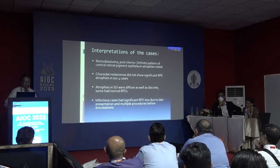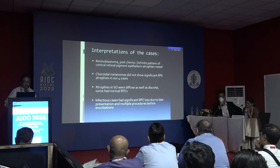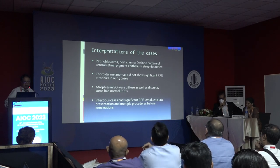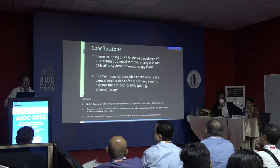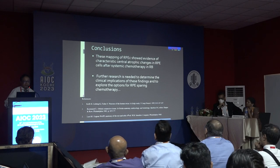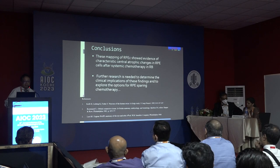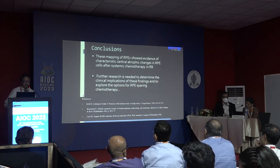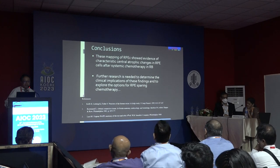Definite patterns were observed: retinoblastoma showed central atrophic changes; choroidal melanoma did not show atrophic changes in four cases; sympathetic ophthalmia showed discrete as well as diffuse changes; and infectious cases had severe RPE loss because of delayed presentation. In conclusion, this mapping of RPE showed evidence of characteristic central atrophic changes in RPE following systemic chemotherapy in retinoblastoma. Further research is needed to determine the clinical implications of this finding and to explore options for RPE-sparing chemotherapy.